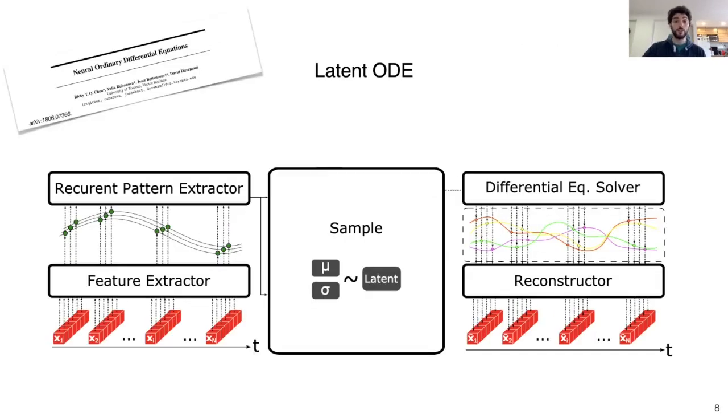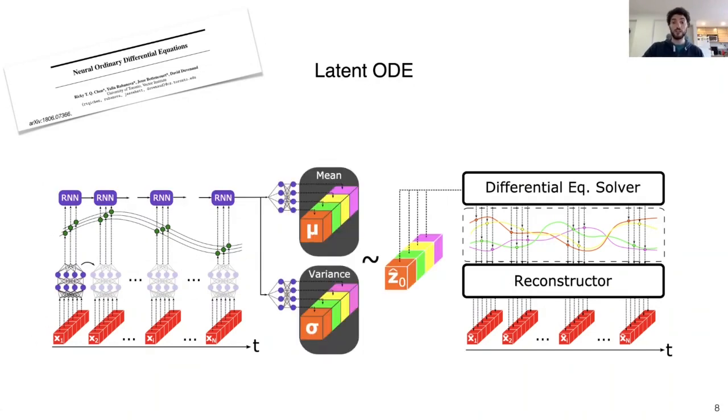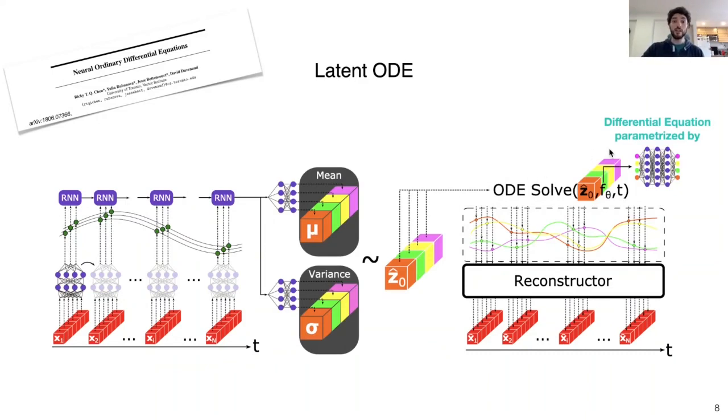One of the models that you can find implemented in our package is the latent ODE model, which simplest version was proposed in the now famous neural ODE paper. In this case, you have some fully connected layers as feature extractor, then some RNNs which learn the mean and variance of the initial conditions for the differential equation. Here, you don't propose a particular form for the differential equation, but use another neural network to parameterize it.